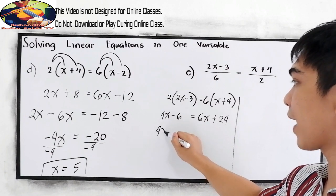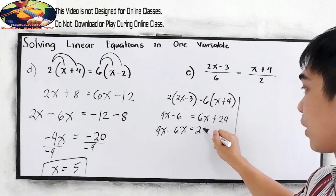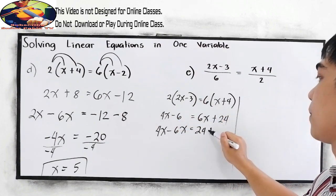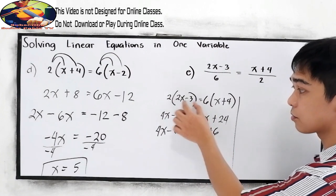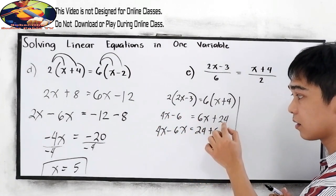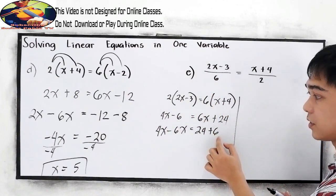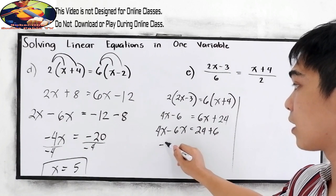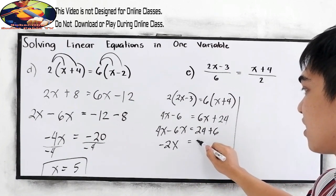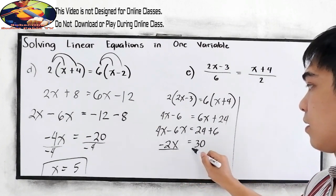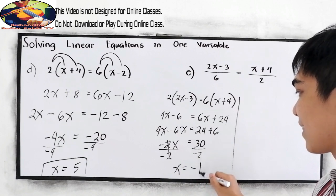Now, we move terms: 4x minus 6x equals 24 plus 6. The positive 6x on the left becomes negative 6x, and the negative 6 moves to the right to become positive 6. Combining like terms gives negative 2x equal to 24 plus 6, which is 30. Divide both sides by negative 2, so x is equal to negative 15.